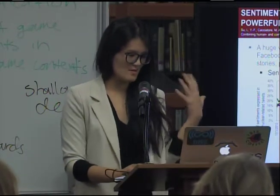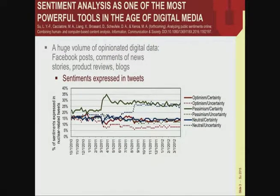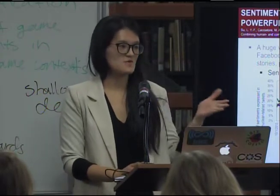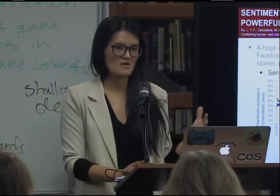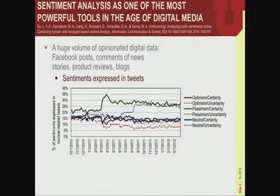Here's one example: I conducted a study analyzing millions of tweets about nuclear power over a period of one and a half years, to see how people's feelings about nuclear power changed in response to the Fukushima disaster. The six lines you see represent two dimensions: how people feel — positive, negative, or neutral — and a certainty dimension, whether people are certain or uncertain about their expressed attitudes.